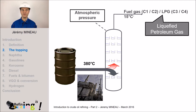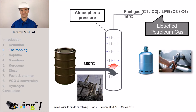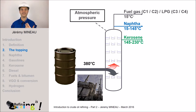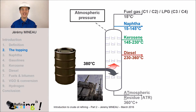We use this C3 and C4 mixture for domestic applications, for example gas bottles, but also for LPG-run vehicles. Then we recover the naphtha, kerosene, and finally diesel fuel. Once we have produced these cuts, at the bottom we have what we call the ATR — atmospheric residue — because these molecules remain liquid at 380 degrees and atmospheric pressure.